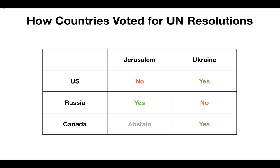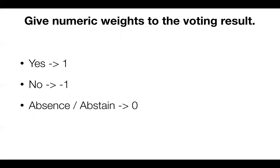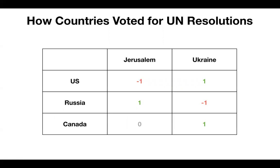For example, the US said no on Jerusalem but yes on Ukraine, and Russia voted the opposite way. Canada voted yes for Ukraine but abstained on Jerusalem. These are text values — yes or no — and we want to calculate the distance between the US, Russia, and Canada to see which countries are similar and which are far. We map those characters to numeric values so we can do the math: yes is 1, no is -1, and abstain is 0. So US is -1 for Jerusalem and 1 for Ukraine, Russia is the opposite, and so on.